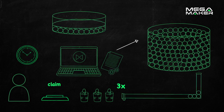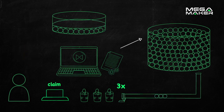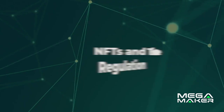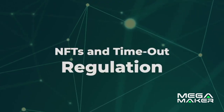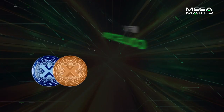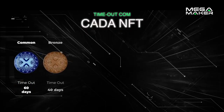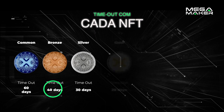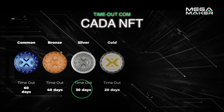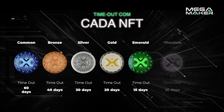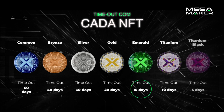Rewards continue to be generated and remain available for claim after the timeout period, according to the user's NFT category. NFTs in Mega Maker play a crucial role in regulating the withdrawal interval. Each NFT category sets a different withdrawal window, ensuring that users with greater involvement have more flexibility in redeeming their rewards. The withdrawal windows are as follows: